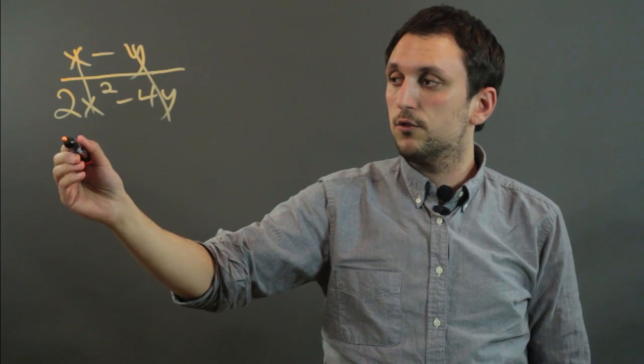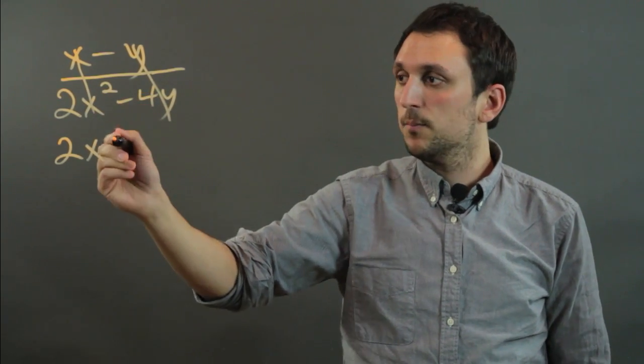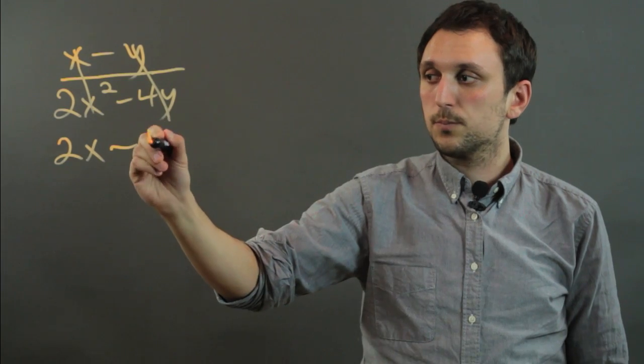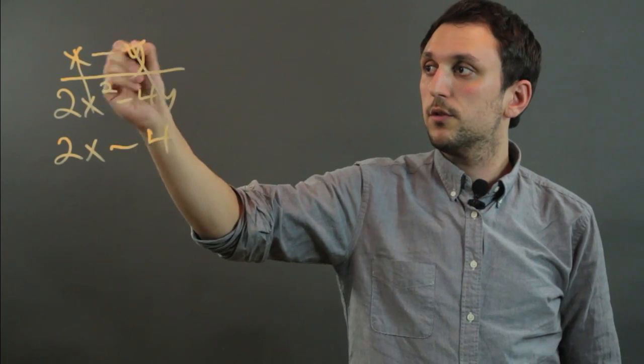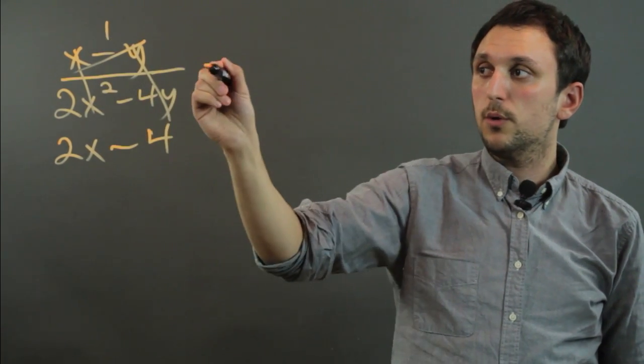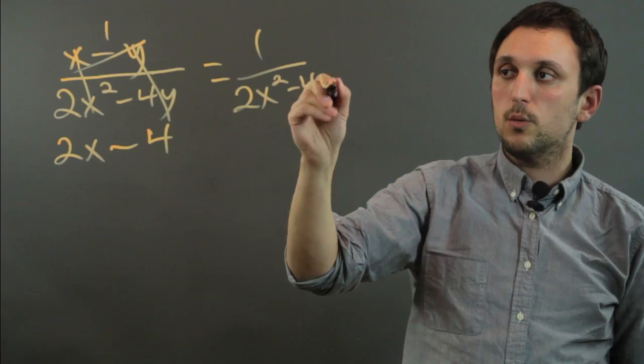We say, okay, now it is just 2x, because there's one x left over when you divide x squared by x, minus 4. And on top, it would be just 1. So we end up with 1 over 2x minus 4.